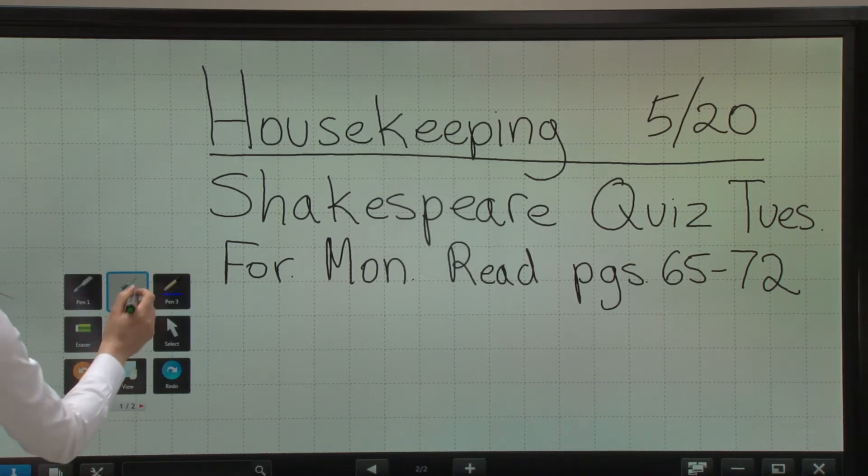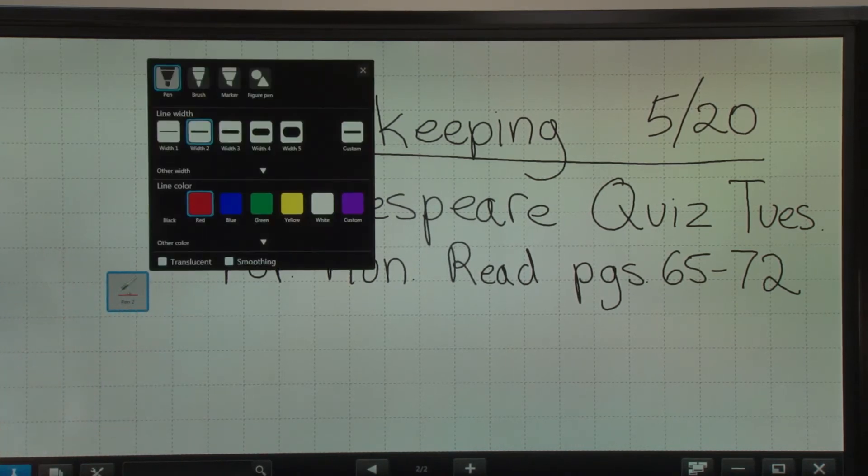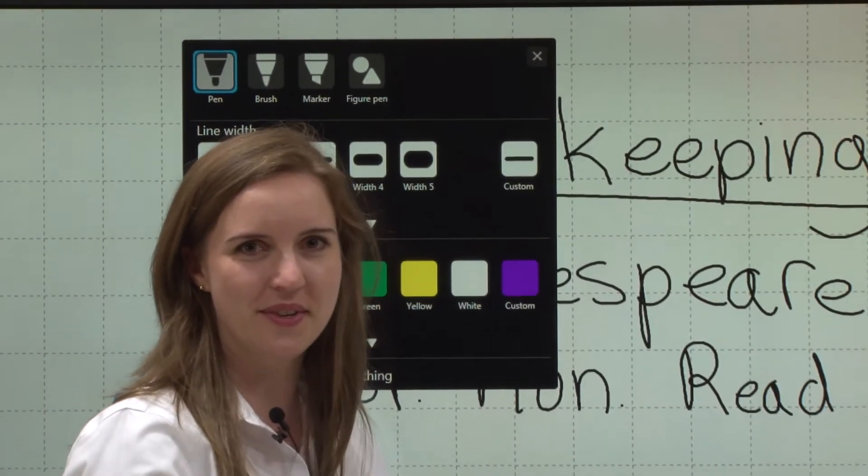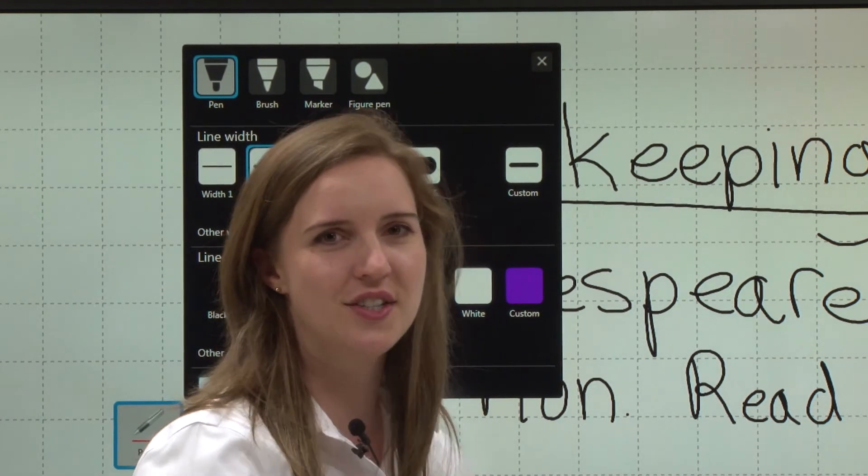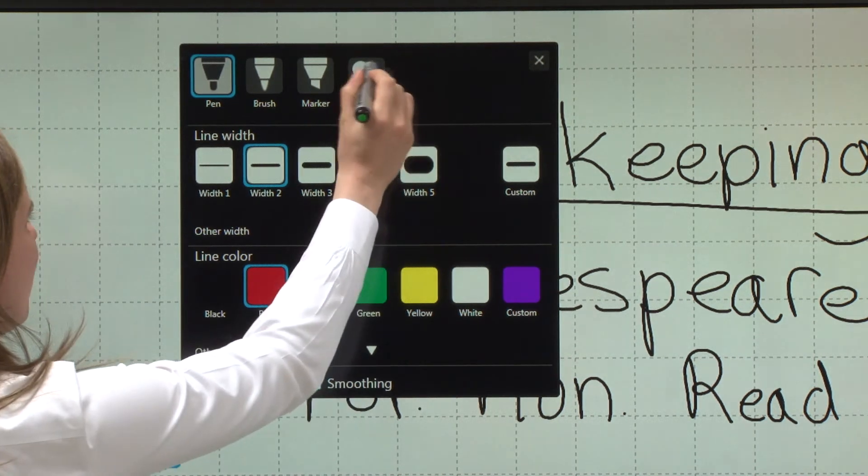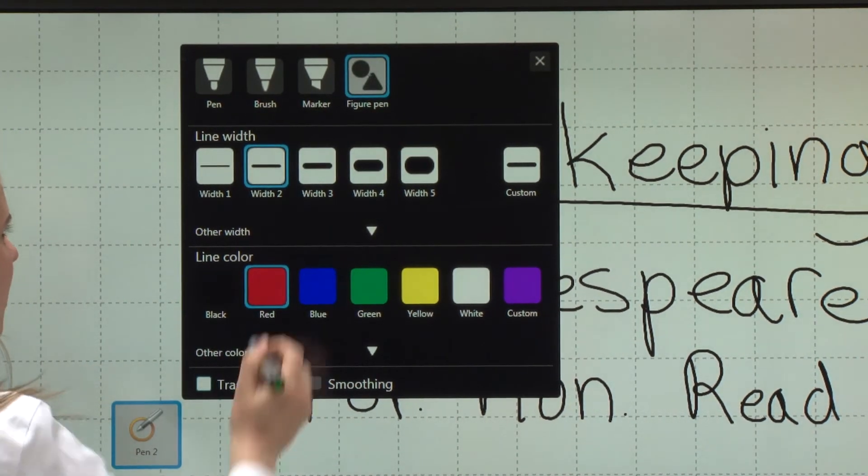Let's say I want to circle something, but I'm not very good at making circles. I'm not an artist. Usually you hear teachers always saying, I'm not very good at art. I teach English or I teach math. What we have with the Aquos board is a figure pen.